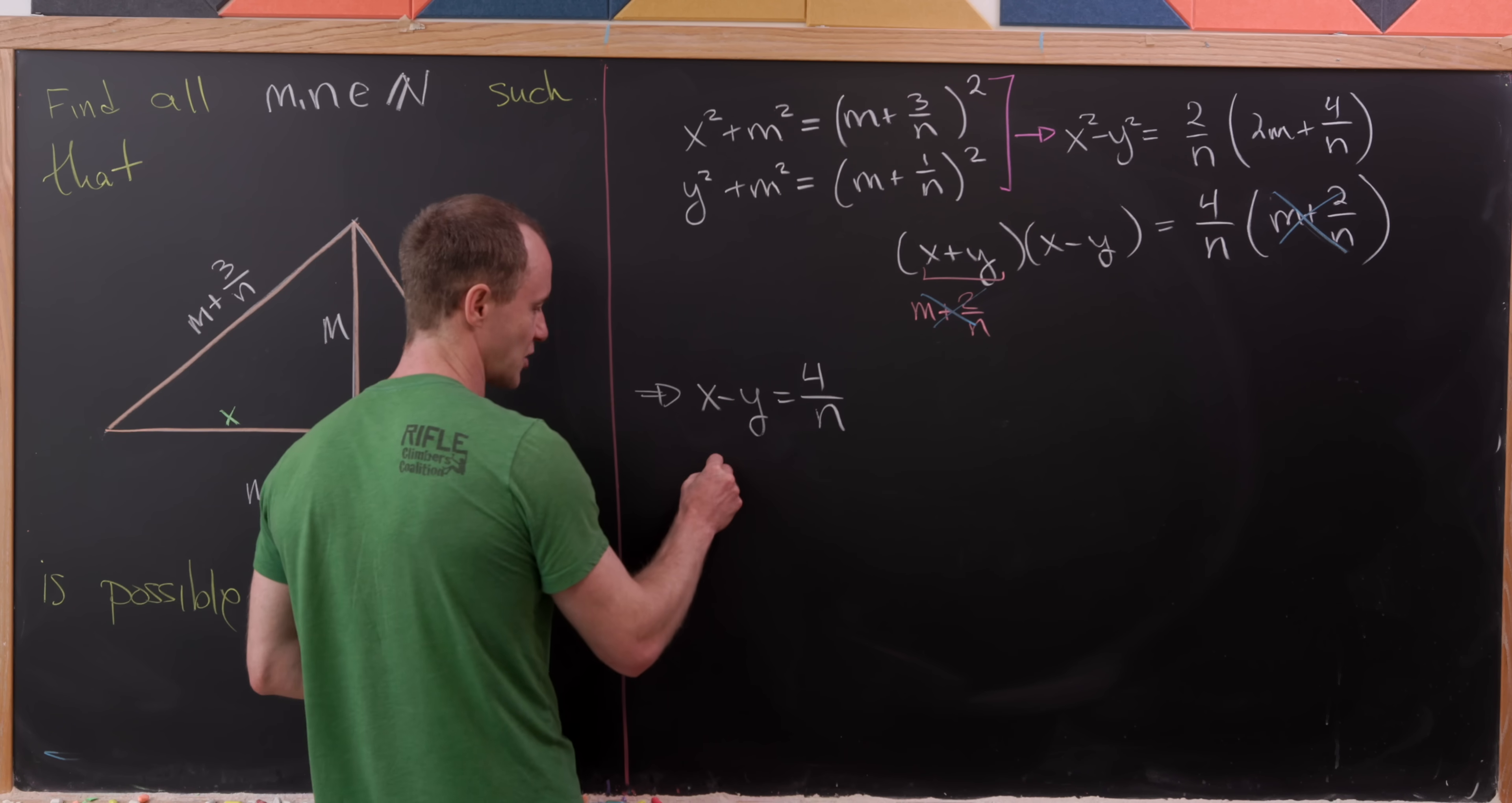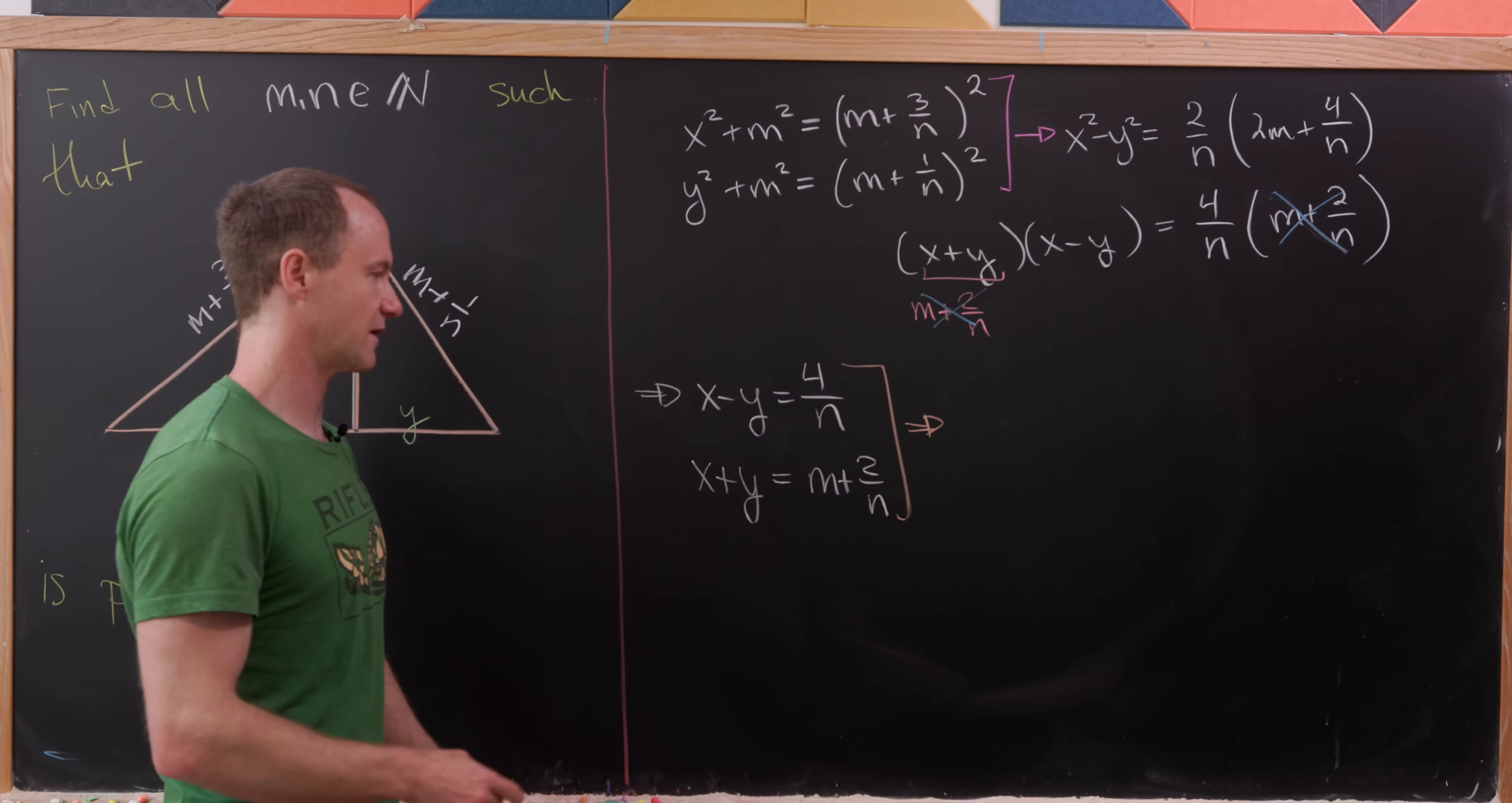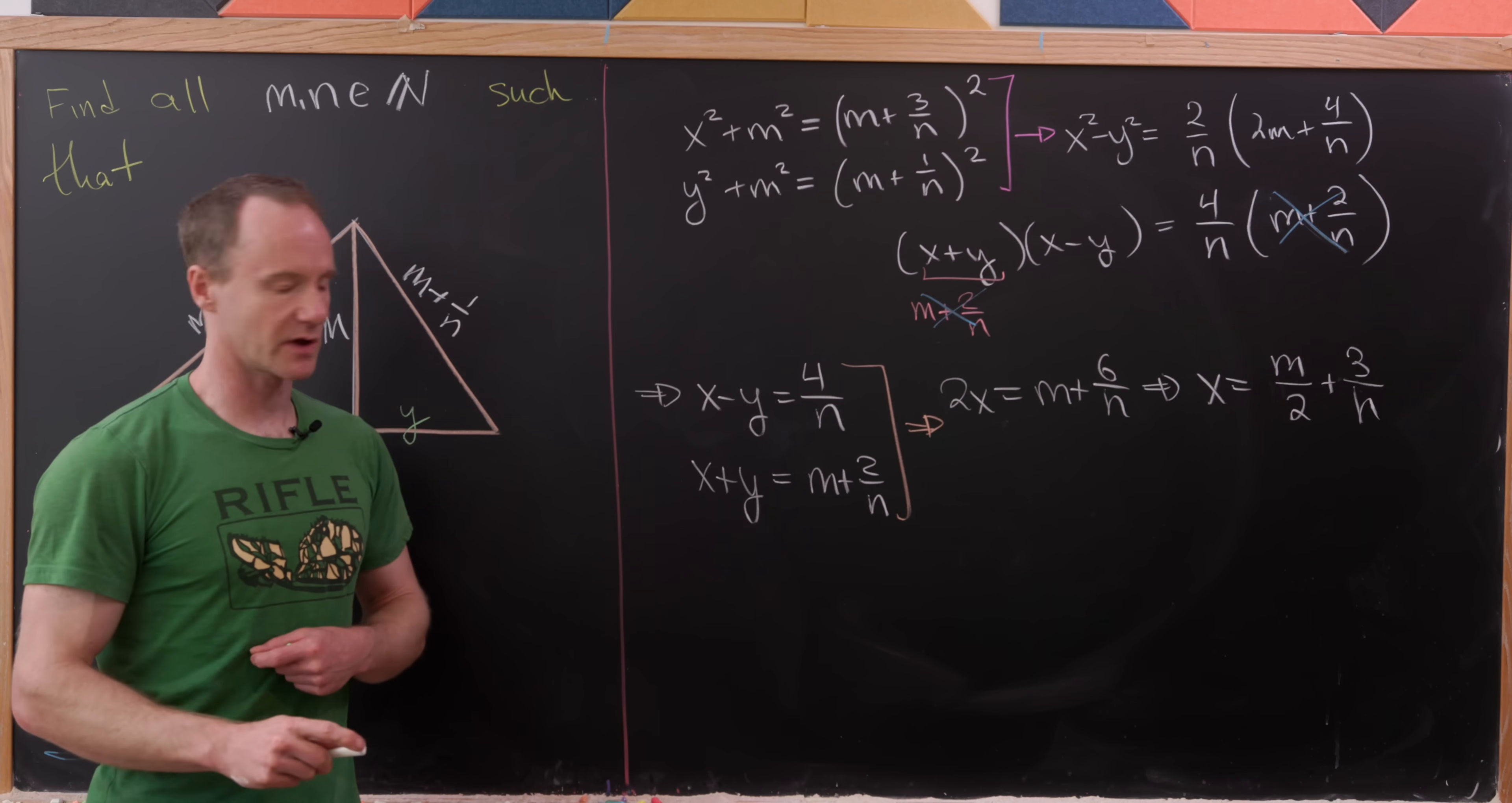And now, let's take that expression and couple it with the sum of x and y, which we've already talked about. So that's m plus 2 over n. And now, let's use this system of equations, which we could clearly solve for x and y pretty easily. So notice, taking the sum of these two equations will cancel the y's out on the left-hand side and leave us with 2x equals m plus 6 over n. But that tells us that x is equal to m over 2 plus 3 over n.